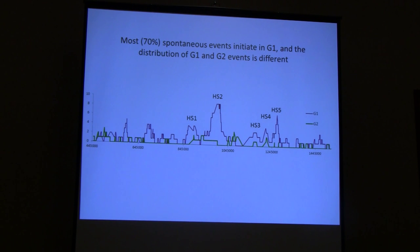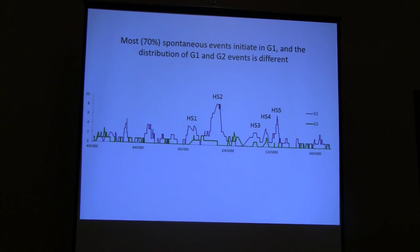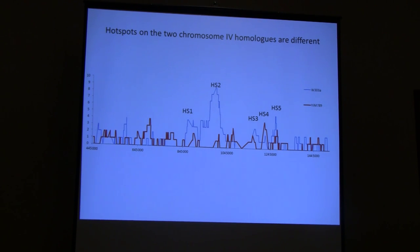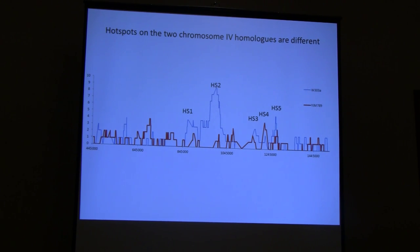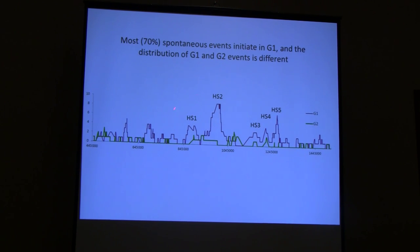We can look separately at G1- versus G2-initiated events using the conversion-type criterion. The distributions are quite different: in purple, G1-initiated events; in green, G2-initiated events, which appear more randomly distributed. The two homologues also have different activities — we can tell this by whether an extra blue or red SNP appears during conversion. In blue are events initiated on the W303-derived homologue; in red, events from the other homologue. Notably, the HS2 hotspot appears specific to W303 and is also G1-specific.